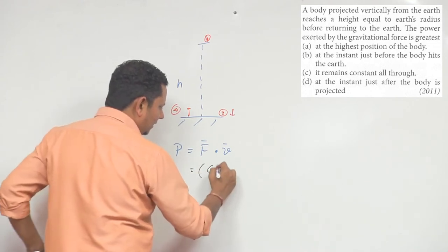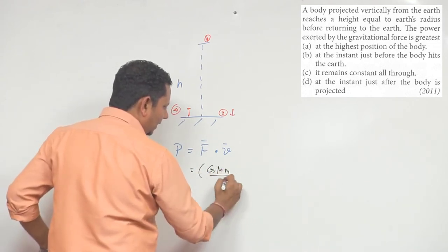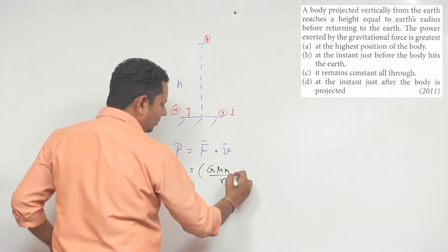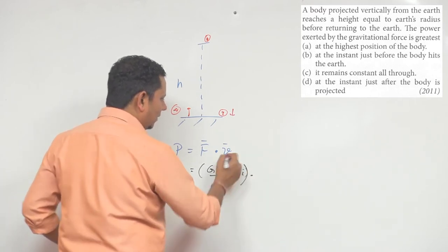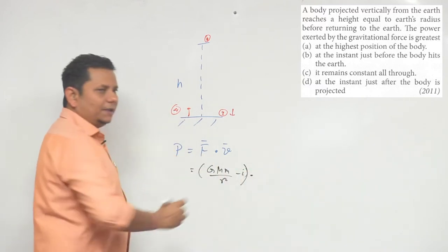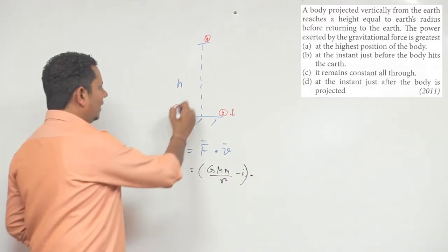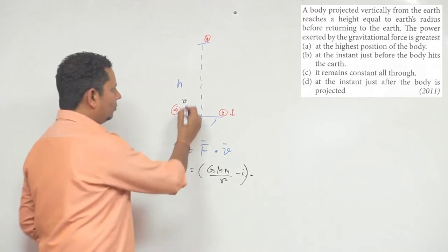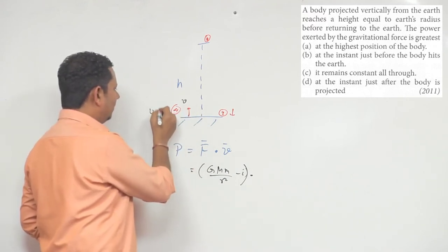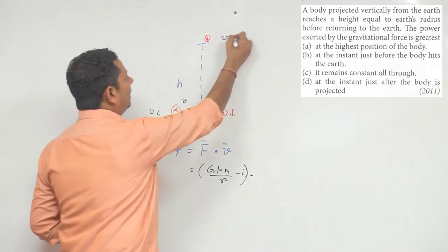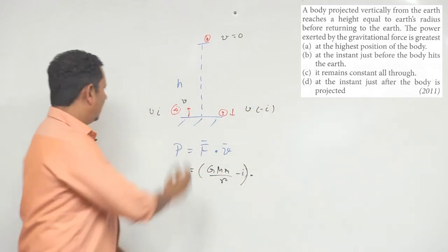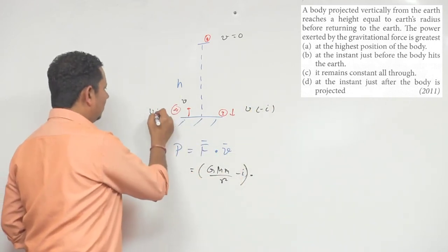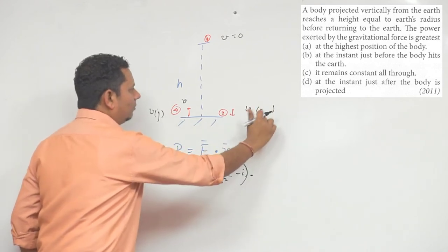And the value is minus i cap in the direction of the force. Now for velocity, this will be plus j cap, this will be minus j cap.